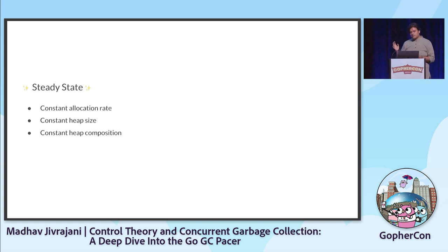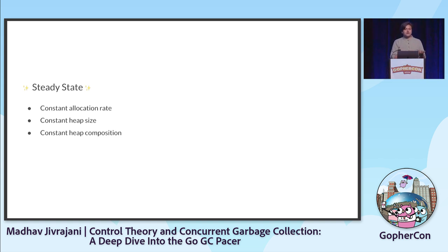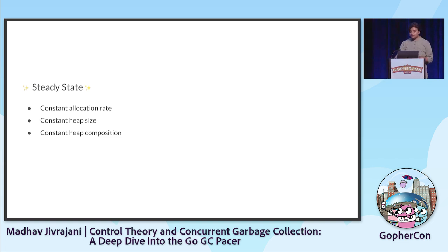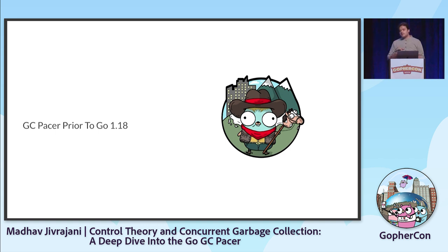The steady state is defined as: in each GC cycle, we expect a constant allocation rate, the heap size is roughly the same, and heap composition is roughly the same — meaning the nature and size of objects, and the heap graph, looks roughly the same in each GC cycle. Now let's dive deep into the GC Pacer prior to Go 1.18.